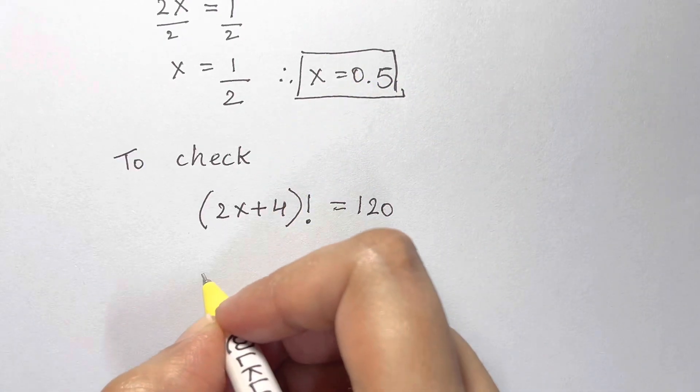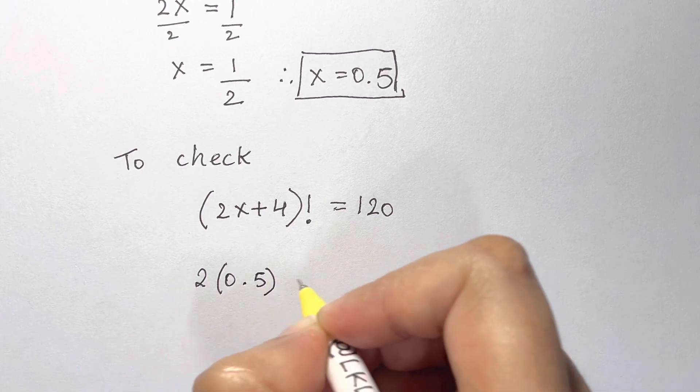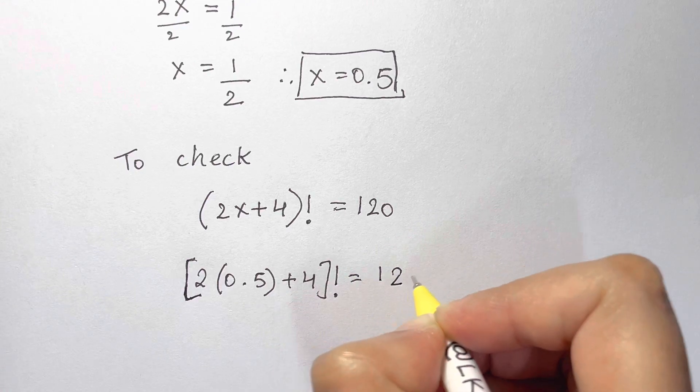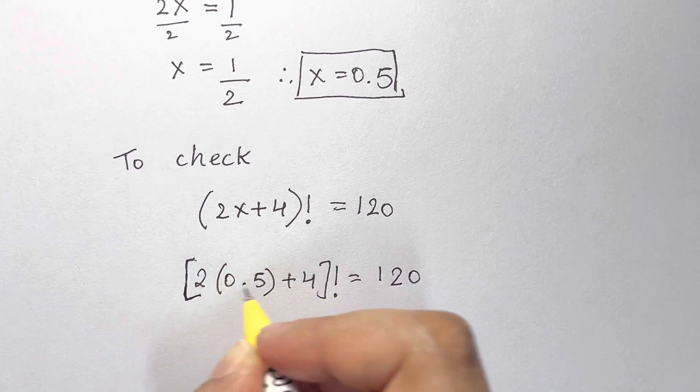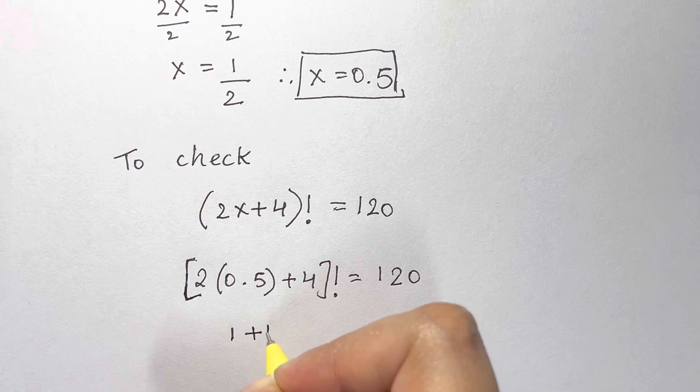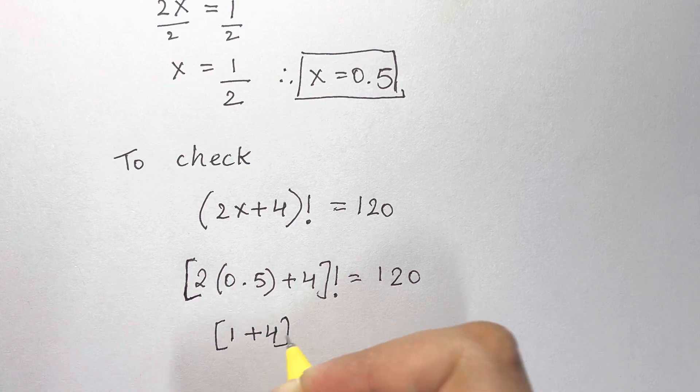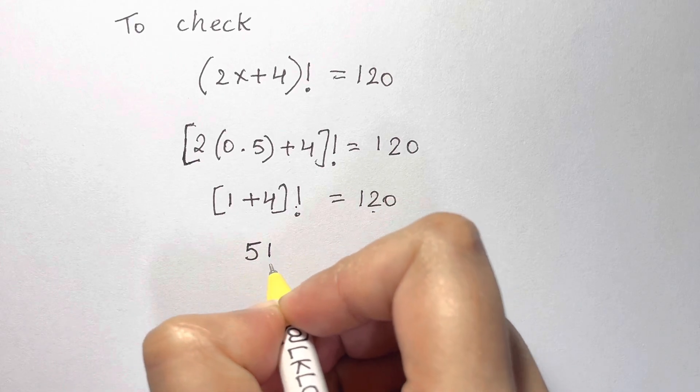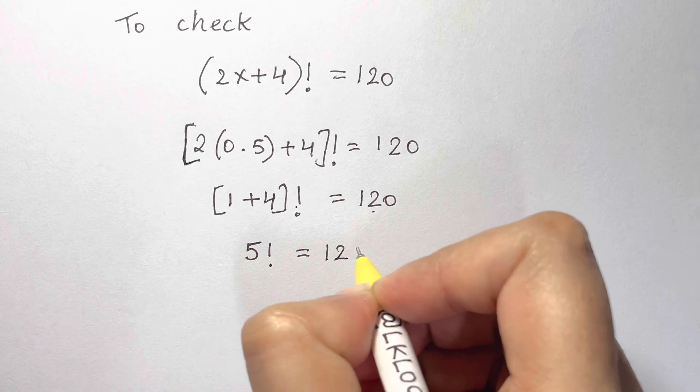So we have [2(0.5) + 4]! = 120. 2 × 0.5 is 1, plus 4 factorial equals 120. That is equal to 5! = 120.